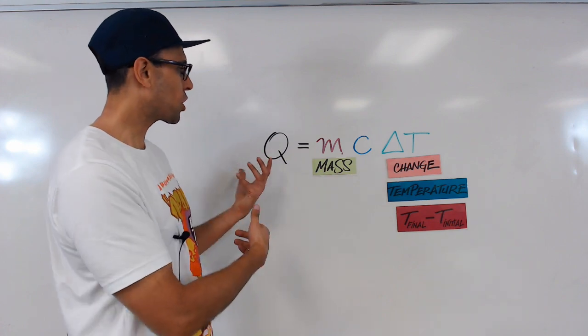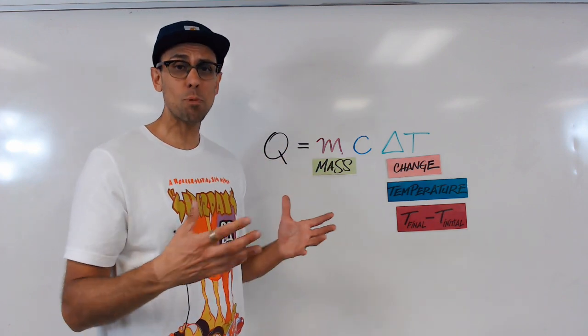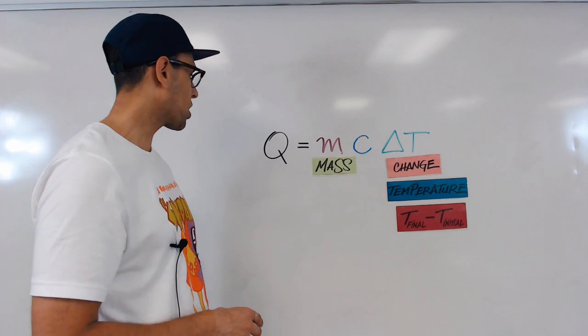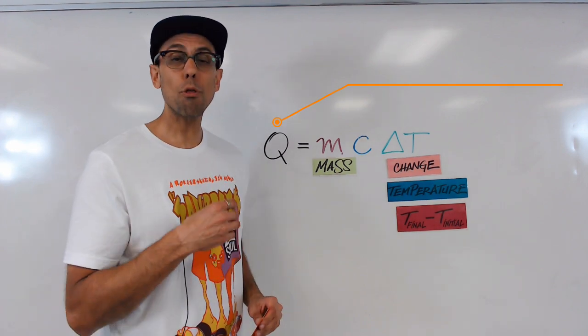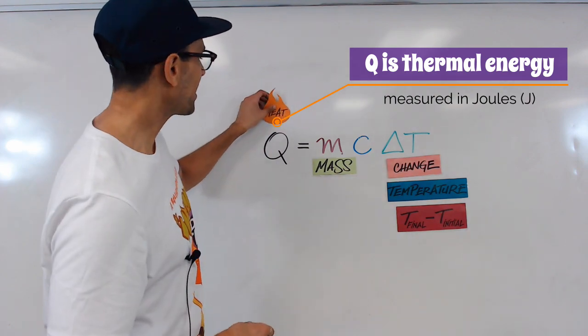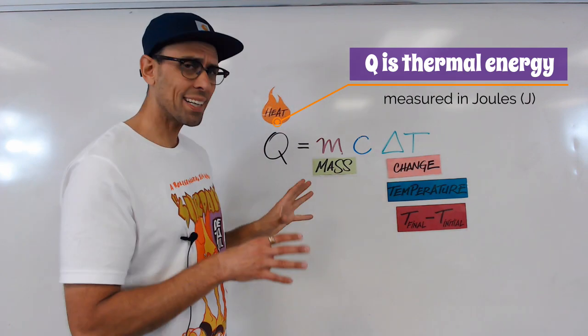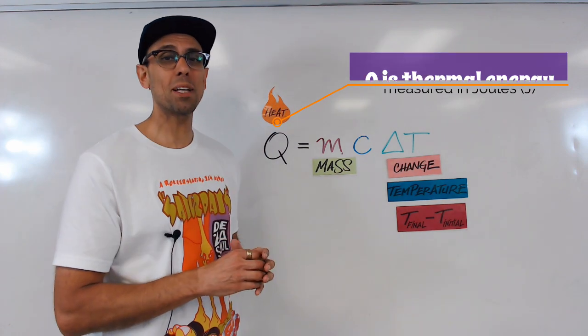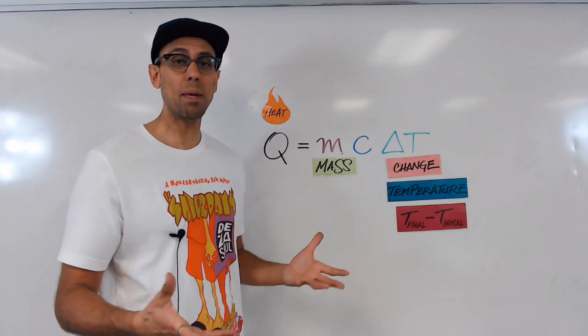So now we're left with Q and C, and those may feel a little bit more foreign. So let's start with Q. Q represents thermal energy. In more common terms, this is heat. Let's take a deeper look, using a simulation, at what thermal energy or heat really means.